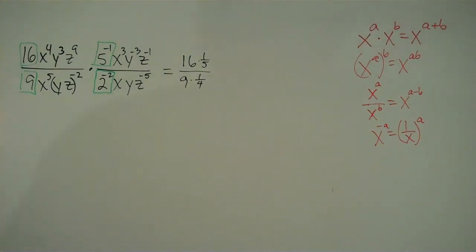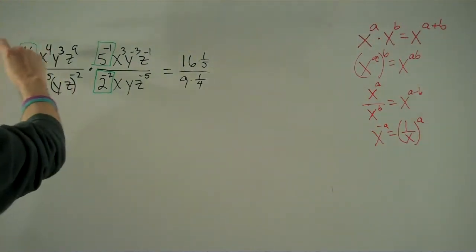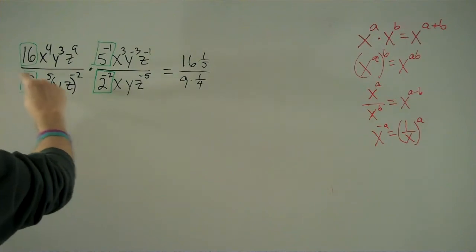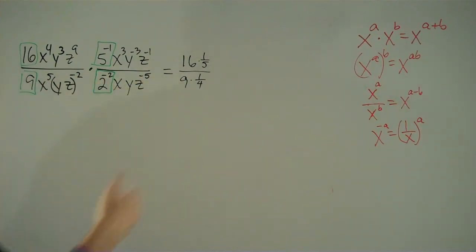And remember, when you're multiplying fractions, all you have to do is just multiply across in the numerator, multiply across in the denominator, simplify, and you can even do that in whatever order you want to.